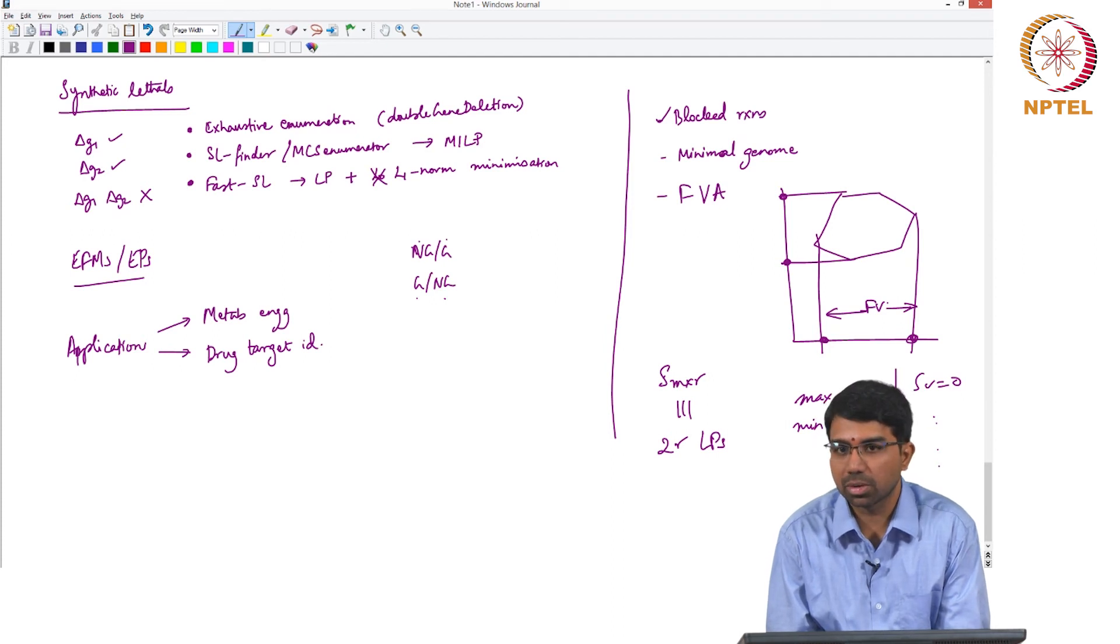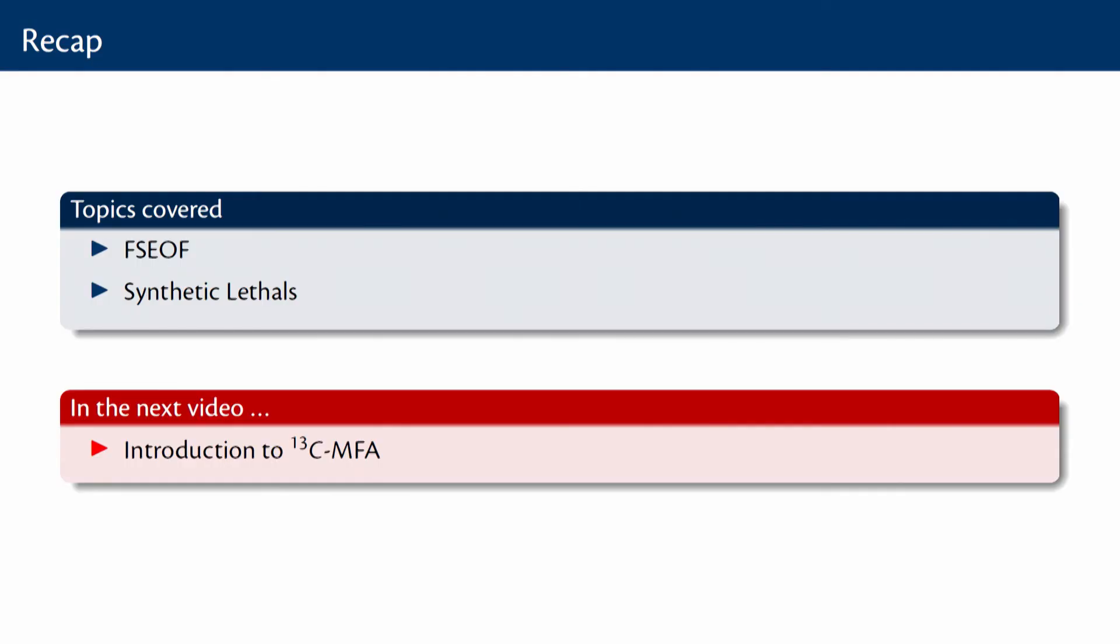So let us wrap up constraint-based modelling with a lab in the evening. With this video we have nearly come to the end of constraint-based modelling. So I have recapped all the important concepts and to cap it off today we looked at FSEOF and synthetic lethals. In the next few videos I have another guest lecturer Aarti Ravikrishnan who is my PhD student who will talk to you about how one performs C13 metabolic flux analysis and how one integrates it with experiments such as GC-MS and so on to predict and quantify internal fluxes in a metabolic network. So there are many internal fluxes in a metabolic network that cannot be uniquely assigned or easily measured without using labelled substrates and that is what we will be discussing in the next few lectures.